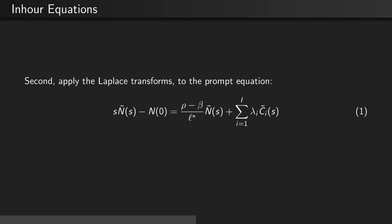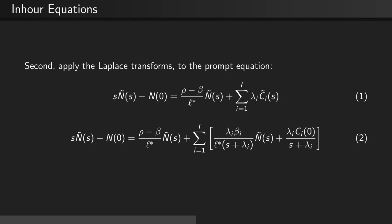Secondly, let's go back and apply Laplace transforms to the prompt equation in the point kinetic equations. Here we see that s times the Laplace transform of the neutron number density minus the initial condition of the neutron number density equals the reactivity minus the delayed neutron fraction divided by the mean neutron generation time times the Laplace transform of the neutron number density, plus the sum of the delayed neutron groups λᵢ times the Laplace transform of the concentrations of the delayed neutron groups. Now let's substitute in C̃ᵢ(s) that we solved for from our delayed neutron groups in the previous slide.